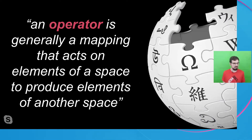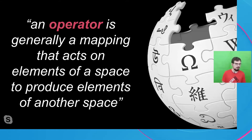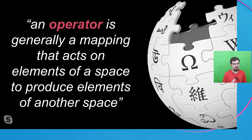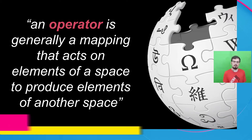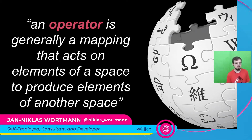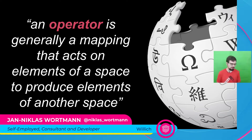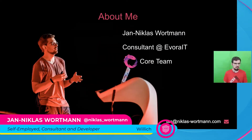I want to start from a very low level. The first thing I could do as a professional is go to Wikipedia to educate myself. Wikipedia says that an operator is generally a mapping that acts on elements of a space to produce elements of another space. Even though this is a very mathematical description, it describes RxJS operators totally well — it acts on something and produces something different.